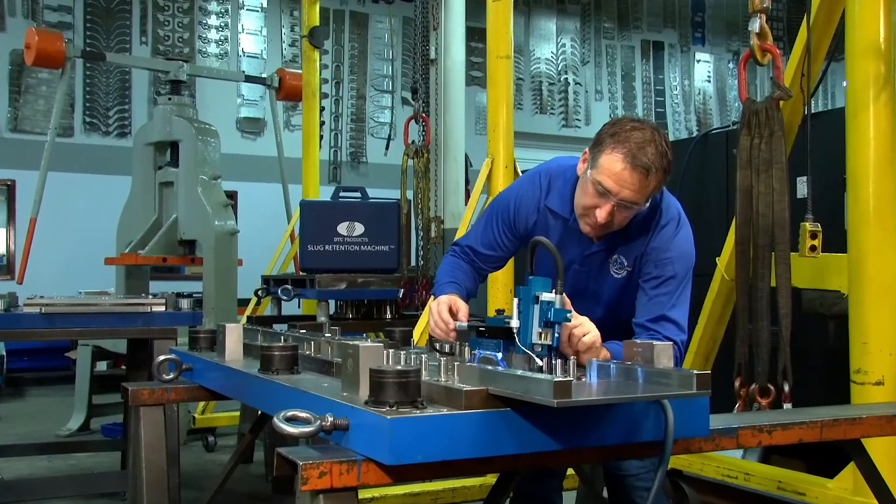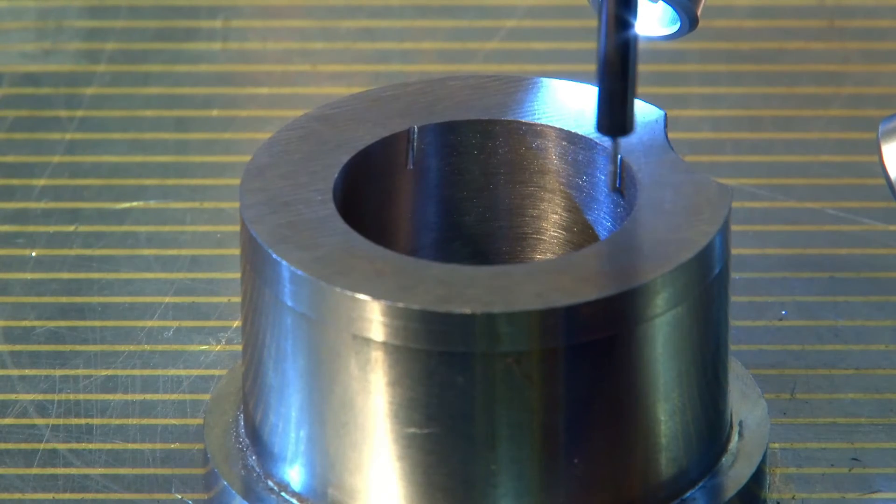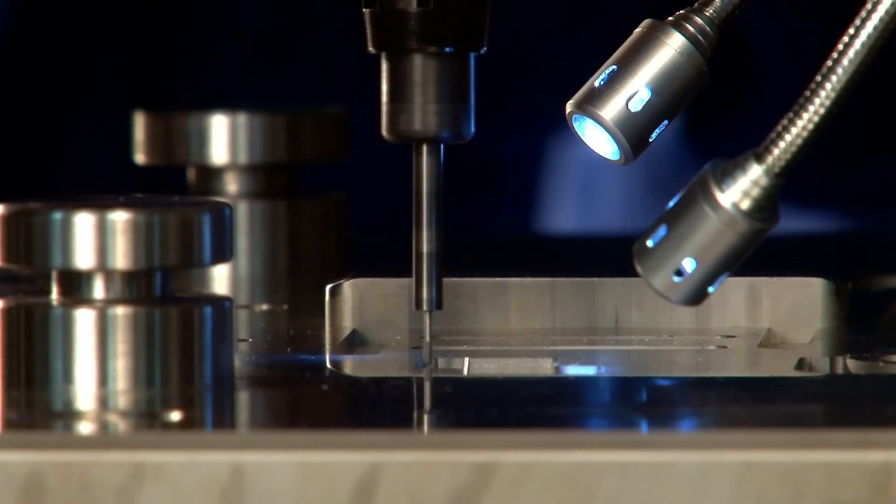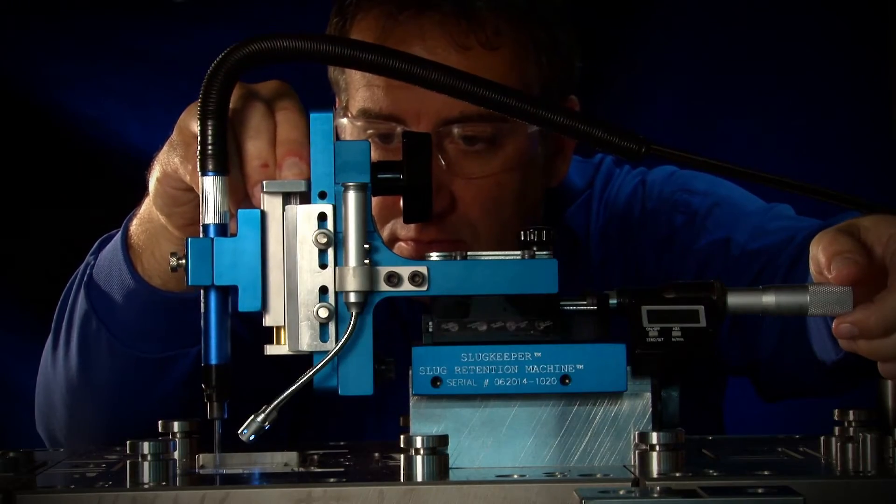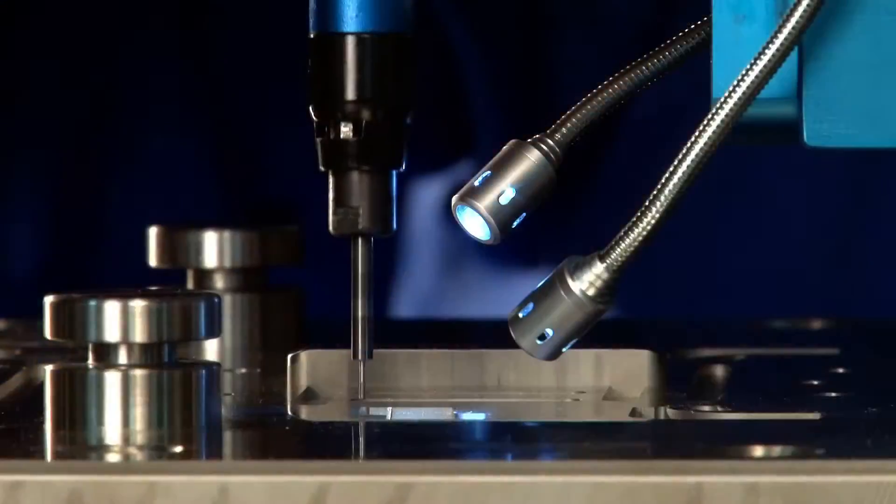The slug keeper can be used on die blocks, die inserts, and die bushings in the tool room, as well as on a die while it's in the press, resulting in even greater savings by eliminating the need to remove the die from the press, disassemble it, and return it back to the press.